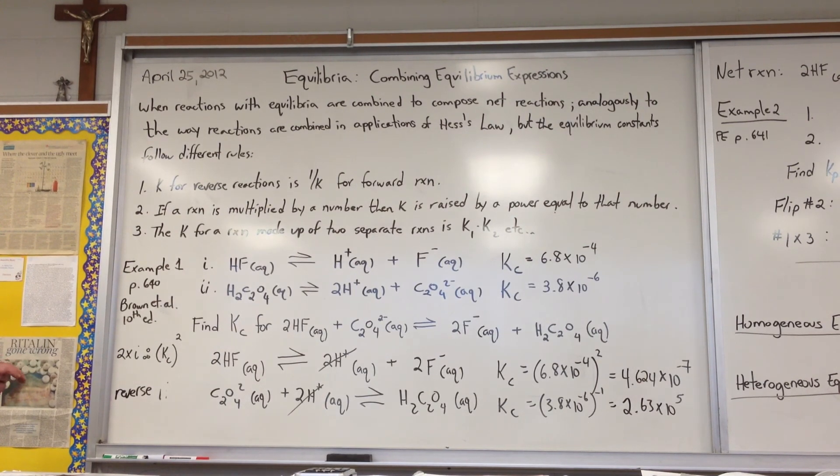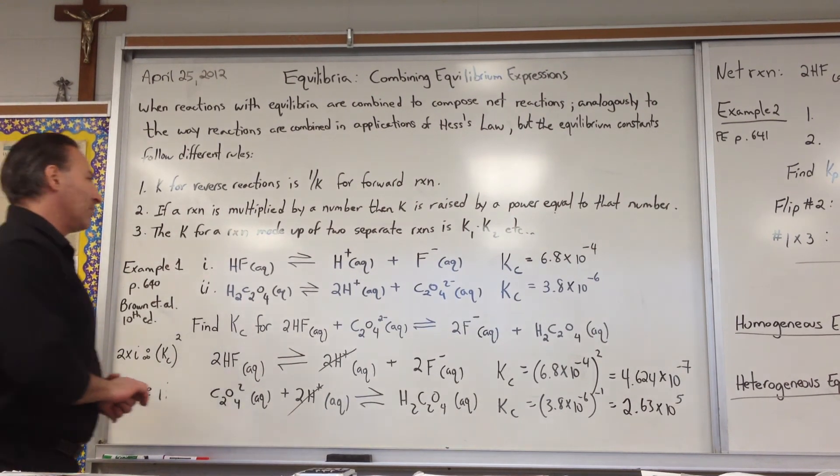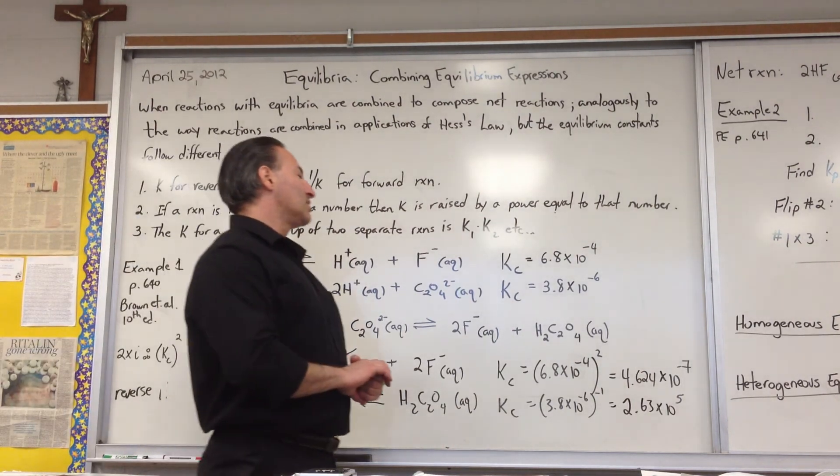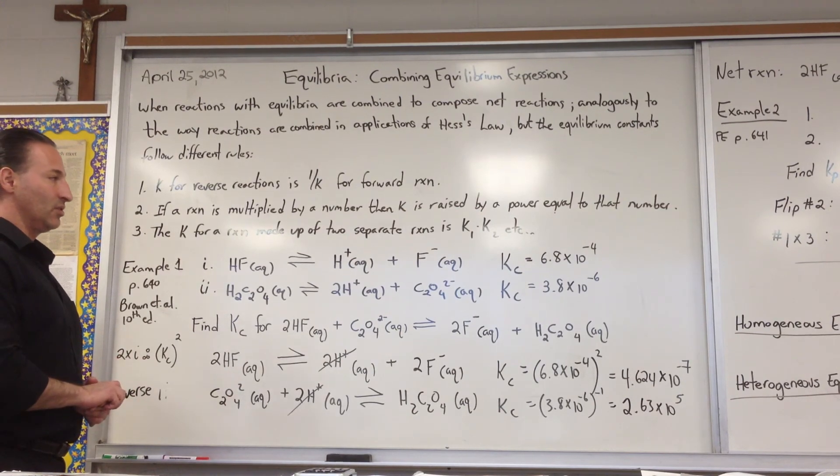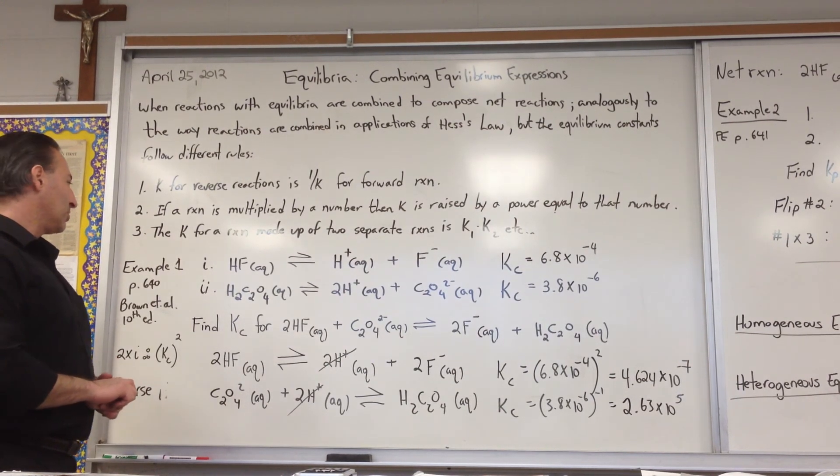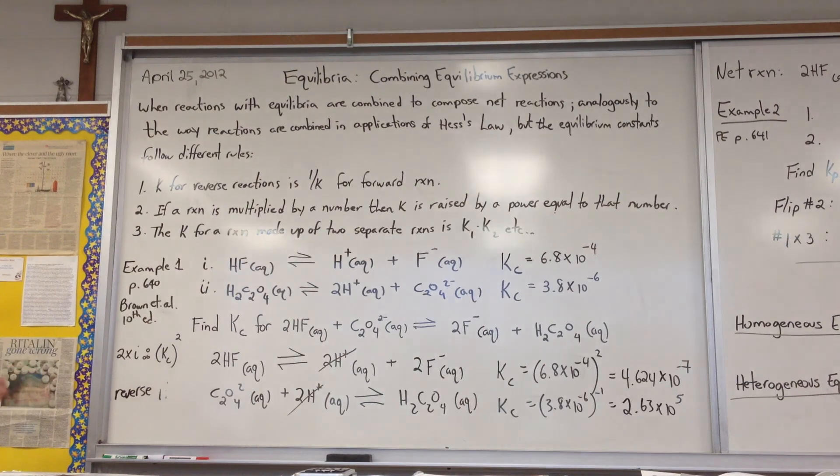And if the K for a reaction made up of two separate reactions is the product of the K of the two reactions that are used. So we'll give an example here. This is from page 640 of your text.